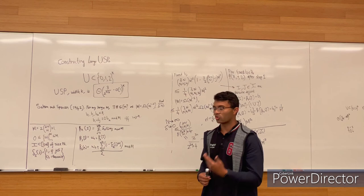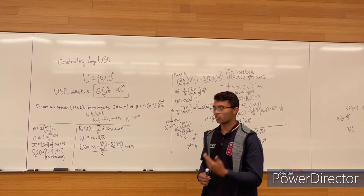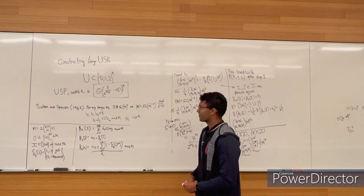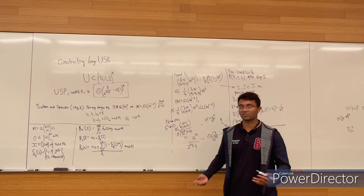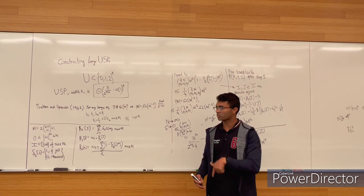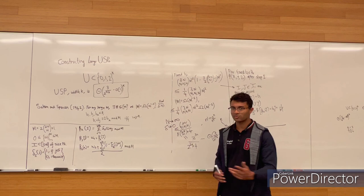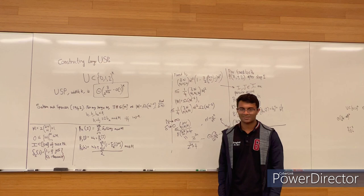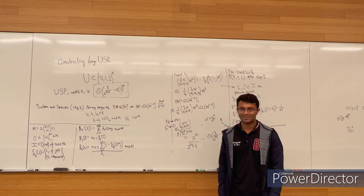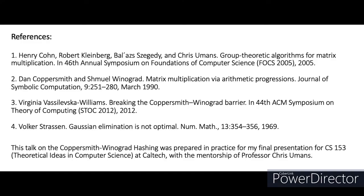So we have that there exist large USPs satisfying this size bound, and because of this, we have a matrix multiplication bound as low as currently known. For the future, if one can construct even larger USPs, we can push the matrix multiplication exponent lower. In fact, there is the concept of strong uniquely solvable puzzles — and if one can improve those, we can show the matrix multiplication exponent is exactly 2, which would be a very beautiful result. Thank you for listening.